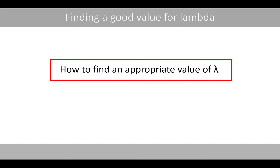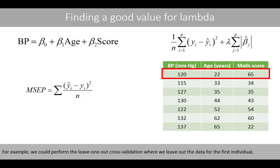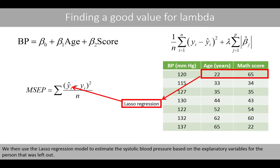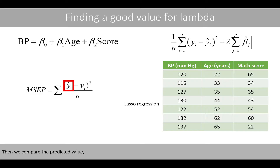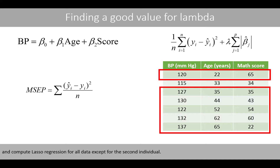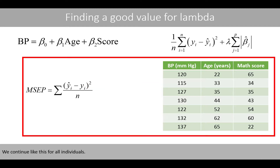We'll now discuss how to find an appropriate value of lambda. One way is to calculate the mean squared error of prediction by some sort of cross-validation across many different values of lambda. For example, we could perform leave-one-out cross-validation where we leave out the data point for the first individual, and then perform LASSO regression on the remaining data with a certain value of lambda. We then use the LASSO regression model to estimate the systolic blood pressure for the person that was left out, and compare the predicted value with the observed value. Then we set aside the data of the second individual, compute LASSO regression for all remaining data, estimate their blood pressure, and compare with the observed value. We continue like this for all individuals.